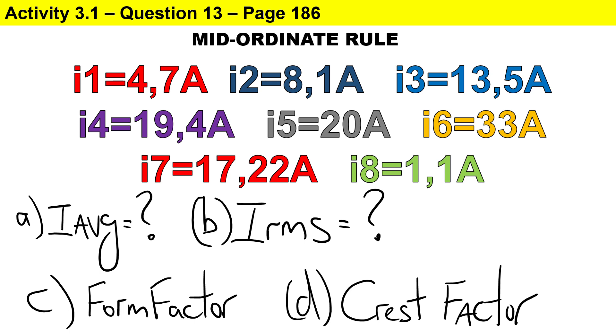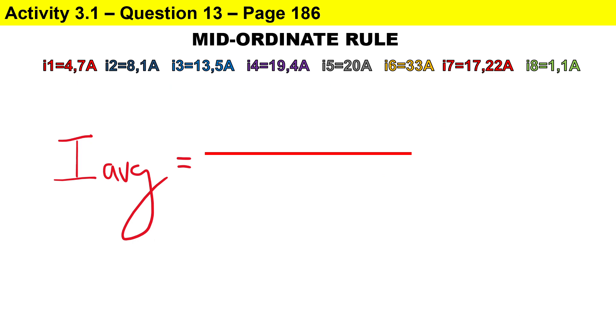We are given eight mid-ordinate values for a sine wave representing current. Using these eight mid-ordinate values, we need to calculate the average value, the RMS value, the form factor, and crest factor.